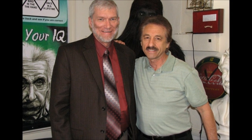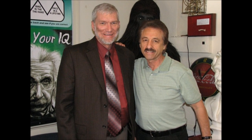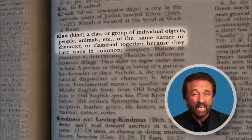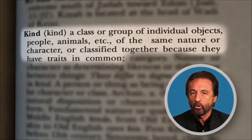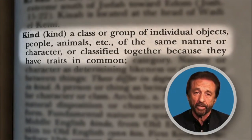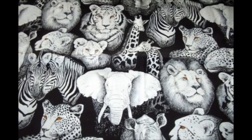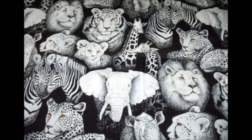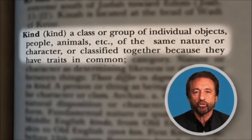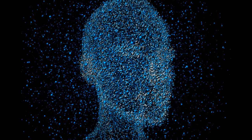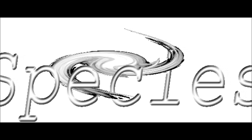Ray Comfort, an associate and contemporary of Ken Ham's, defines kinds in the following way: it's the dreaded word 'kind' — that archaic word that the dictionary defines as a class or group of individual objects, people, animals, etc., of the same nature or character, or classified together because they have traits in common. This definition also fails because it doesn't quantify, as phylogenetic systematics does, the number of common traits versus uncommon traits that would lead to an animal being classified as one kind or another. Using Ray's own definition, I can say that all living organisms are the same kind because they're all made up of atoms. I can simultaneously define a kind as the set of organisms similar enough to conceive fertile offspring.